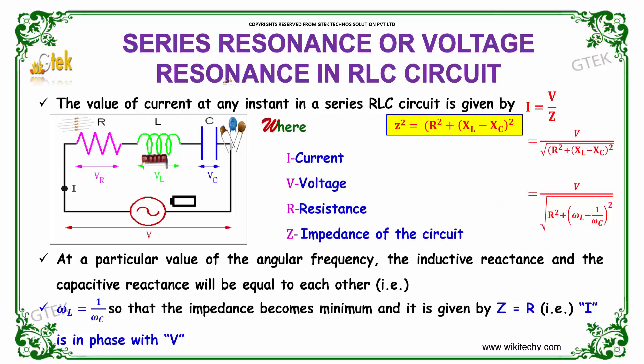Let's talk about series resonance or voltage resonance in RLC circuit. The value of current at any instant in a series RLC is given by I equals V divided by Z, where Z squared equals R squared plus XL minus XC whole squared.